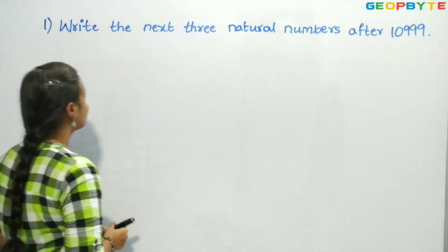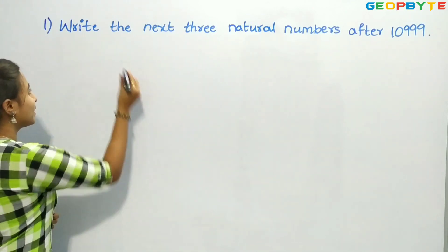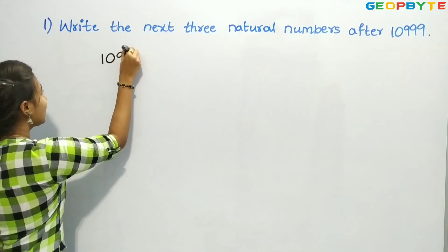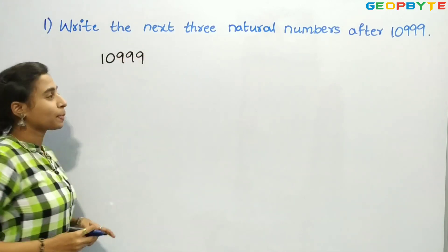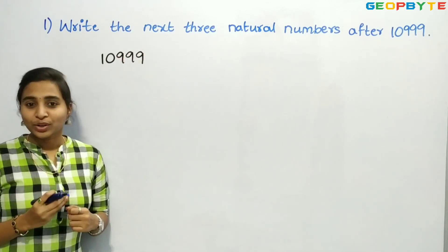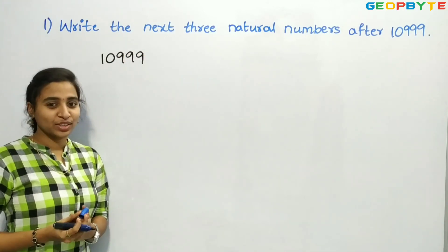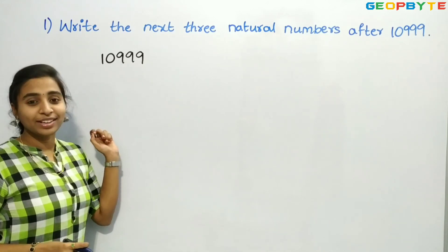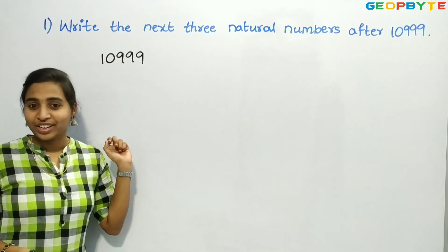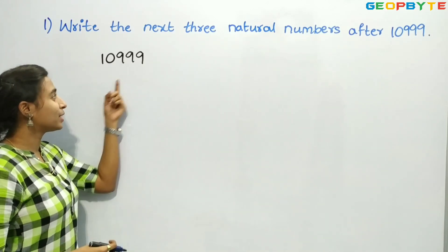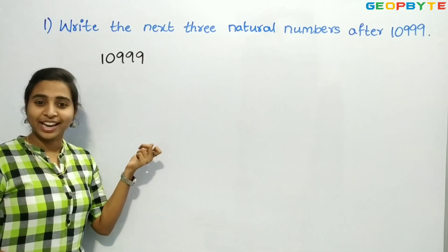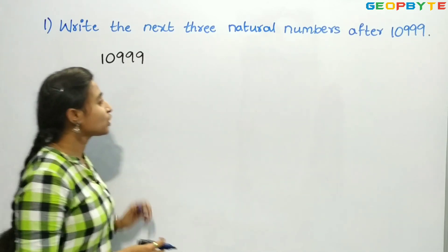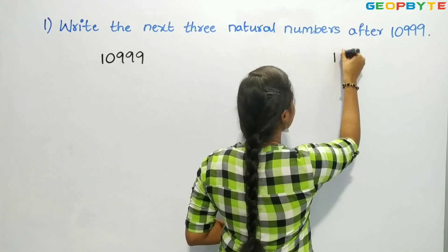First, let us take that number 10,999. We need to write the next 3 natural numbers. How can we write them? If we add 1 to this number, we will get the next natural number.